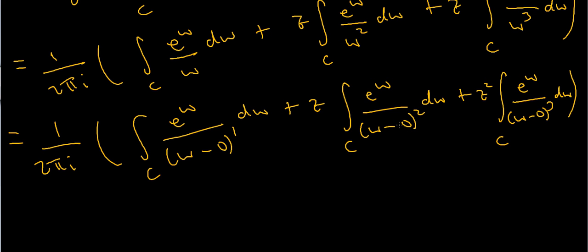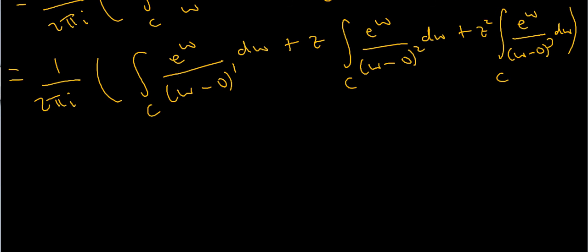Now I'm going to let f of w be equal to e to the w. Notice that this function is actually entire, in other words it's holomorphic on the whole complex plane. And the point at z equals 0 is also clearly inside my contour. Cauchy's integral formula says that I'm going to have to use the derivative of this function evaluated at this point.